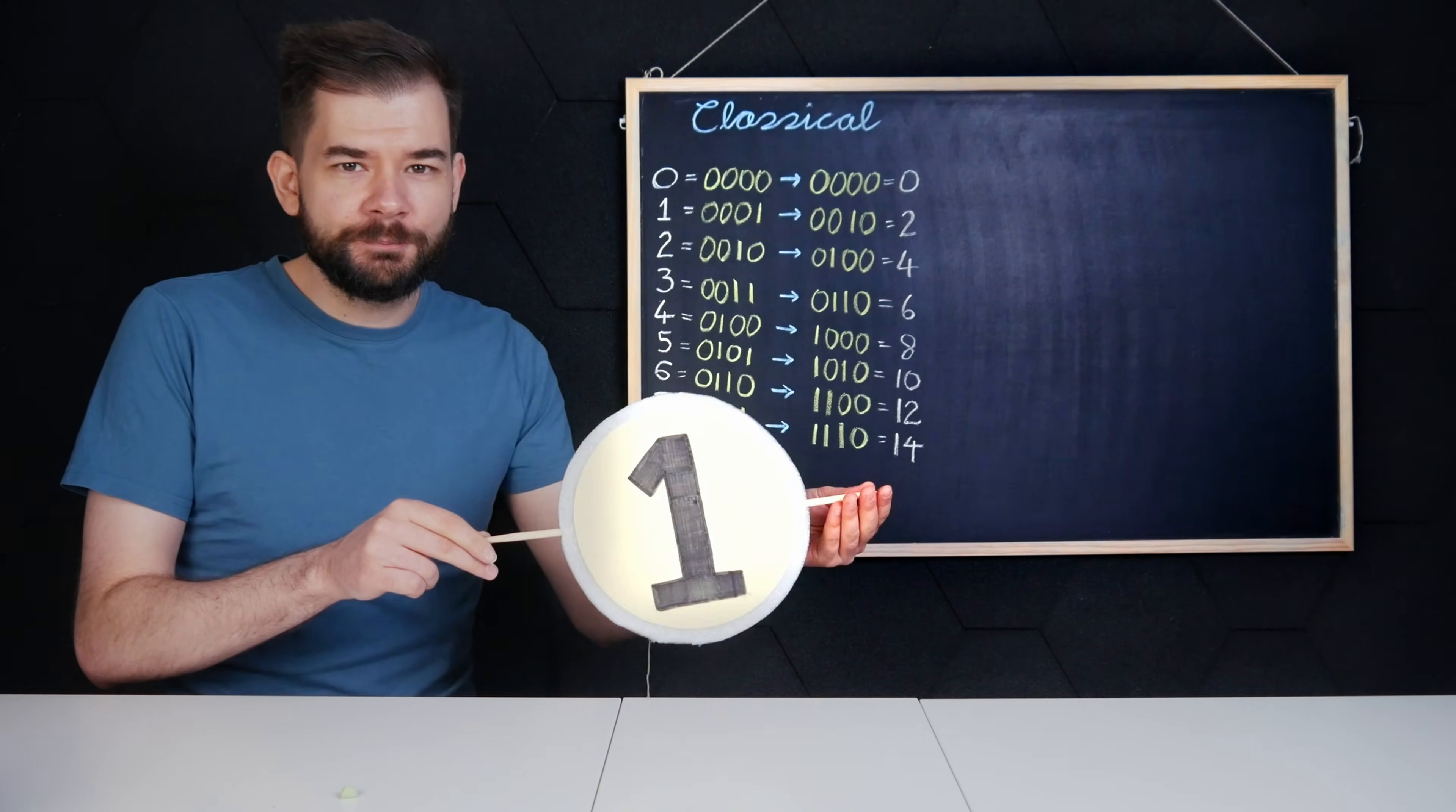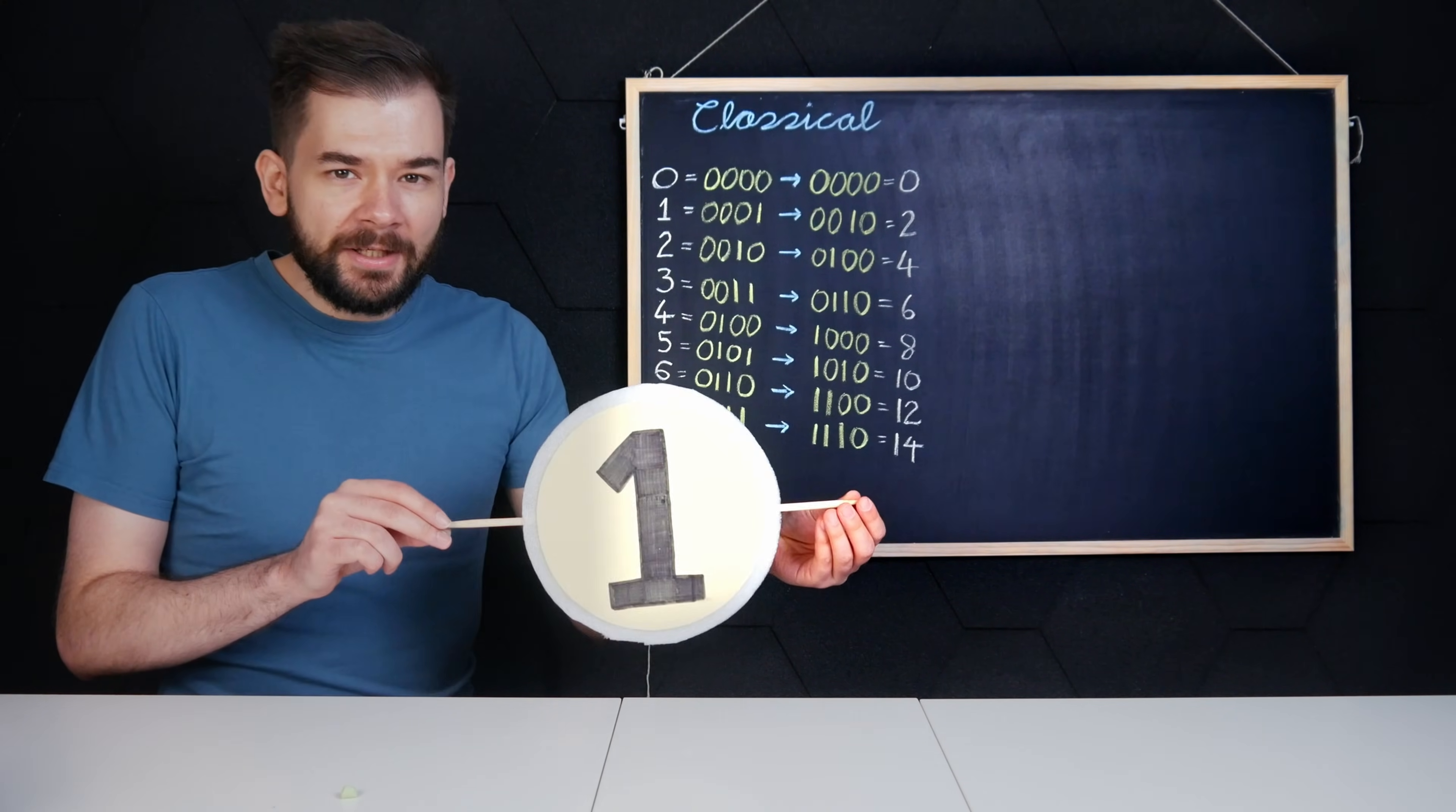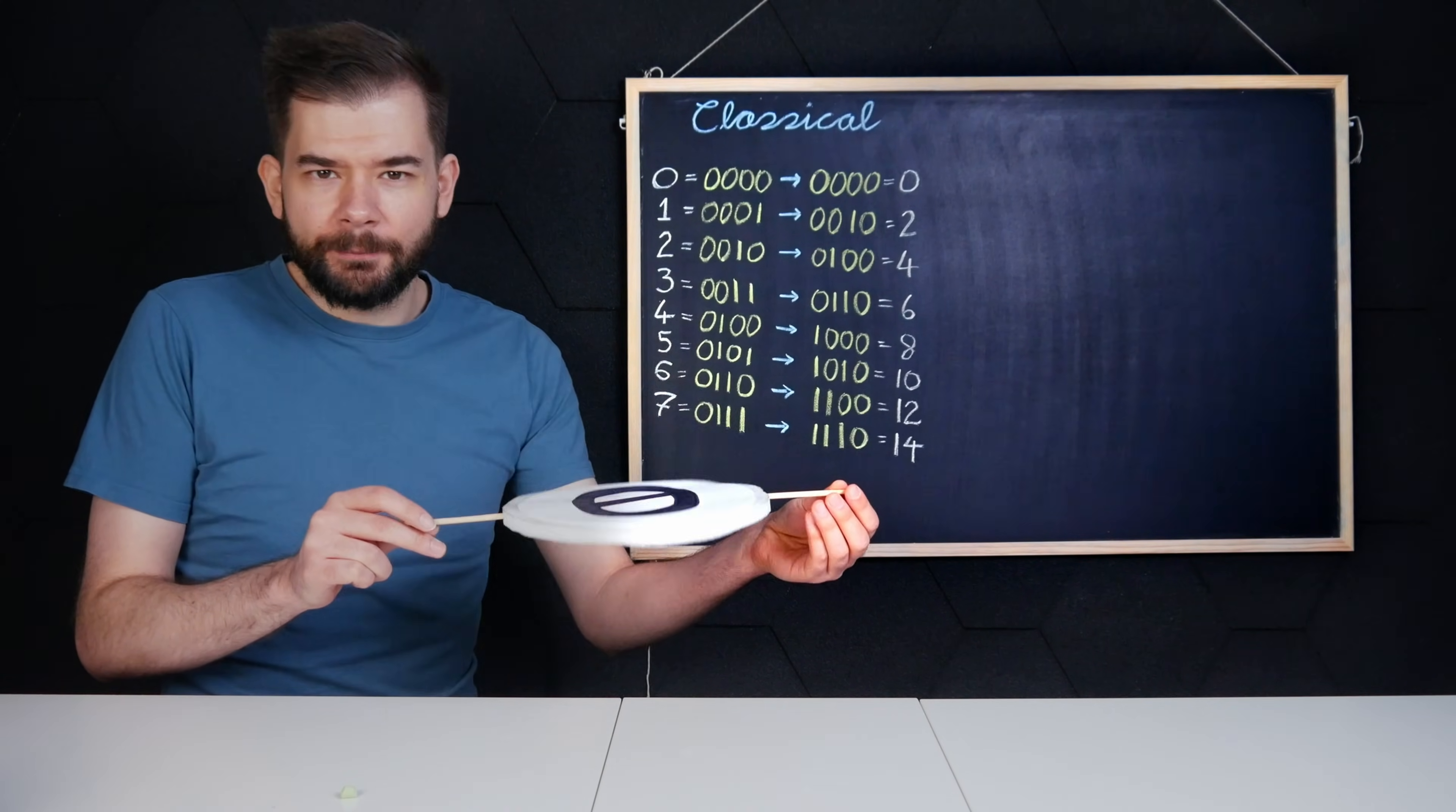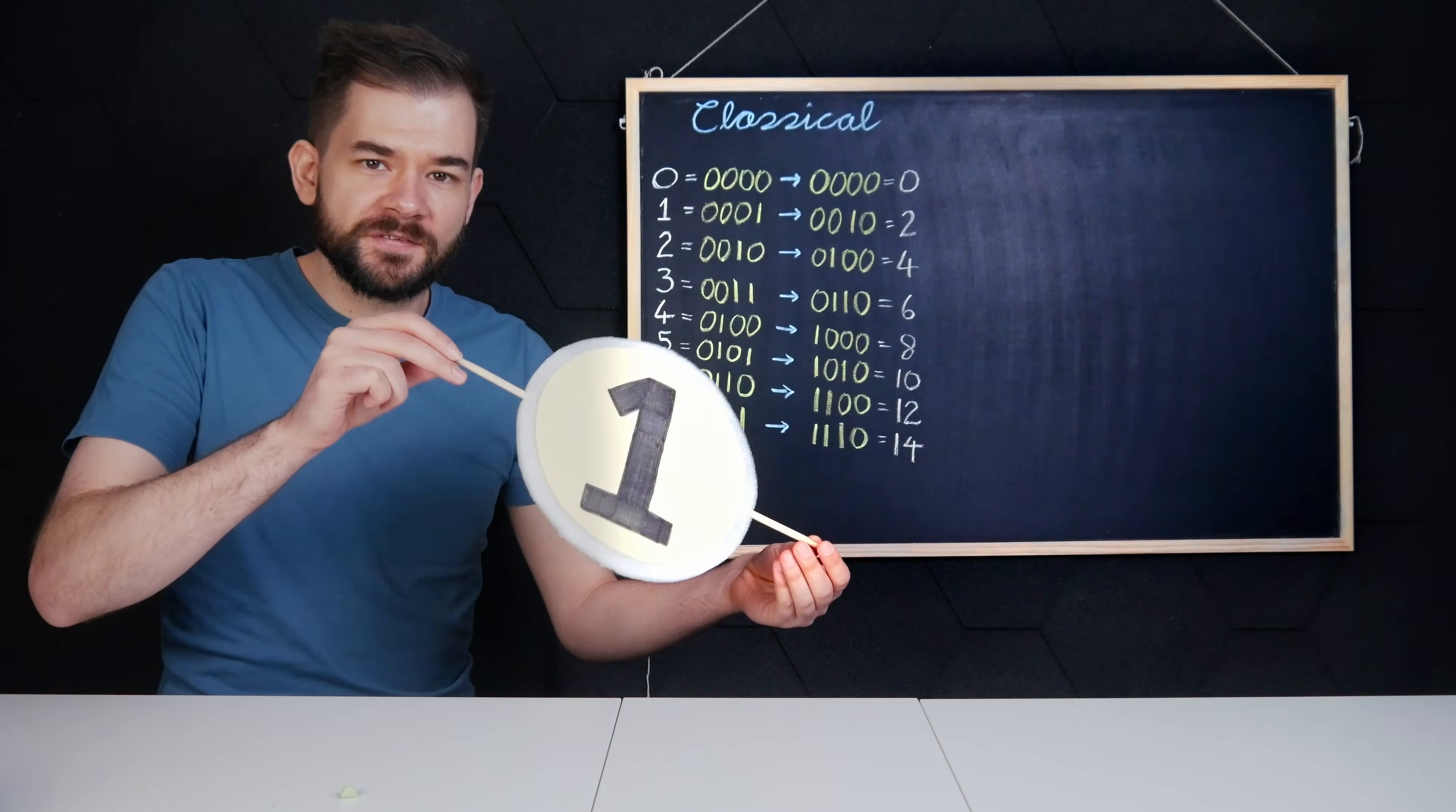A qubit is like a spinning coin with heads or tails, but its value is only determined when we look at it. By applying certain operations we can alter the probability that it will fall on one side or the other. So, say I randomize the coin in a way that makes each face 50-50, but then I subject it to a magnetic field which can, say, make heads a bit more likely.